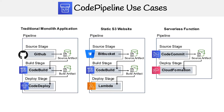I just want to show you some use cases for code pipeline — some variation in terms of how pipelines can vary. Starting with a traditional monolithic application, this would be if you're deploying a Ruby on Rails app, Django, or a Laravel application. You normally have a source, build, and deploy stage.